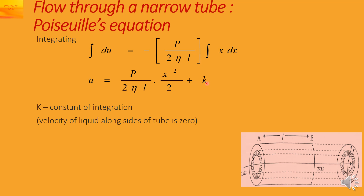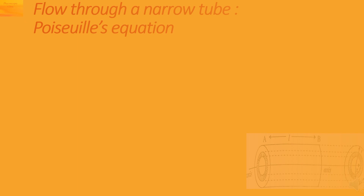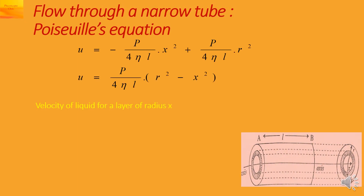The velocity of the liquid along the sides of the tube is zero. So when the distance x equals R, that is at the wall of the tube, u equals zero. Substituting u equals zero and x equals R gives 0 equal to minus P upon 4 eta L into R squared plus k, so k equals P R squared upon 4 eta L. Substituting k back into the velocity formula gives u equal to P upon 4 eta L into the bracket R squared minus x squared.